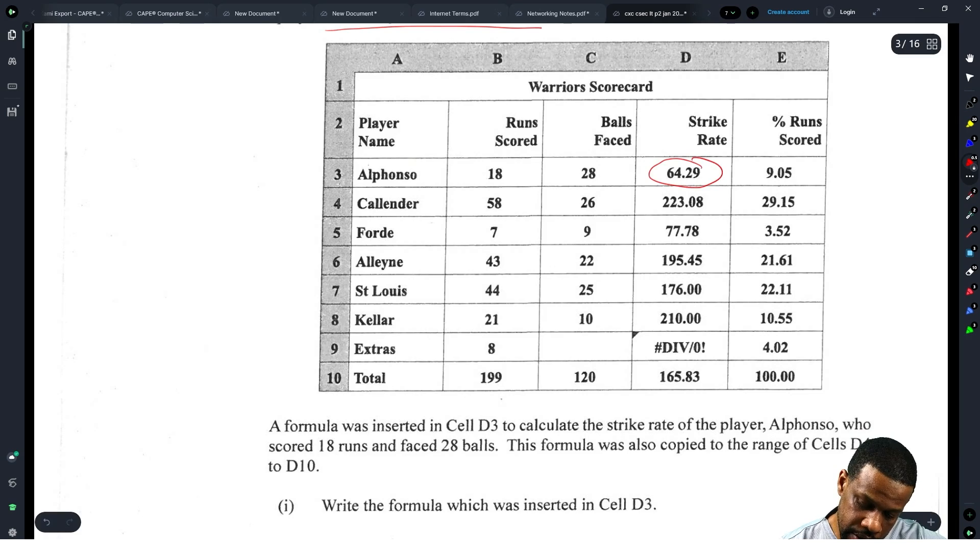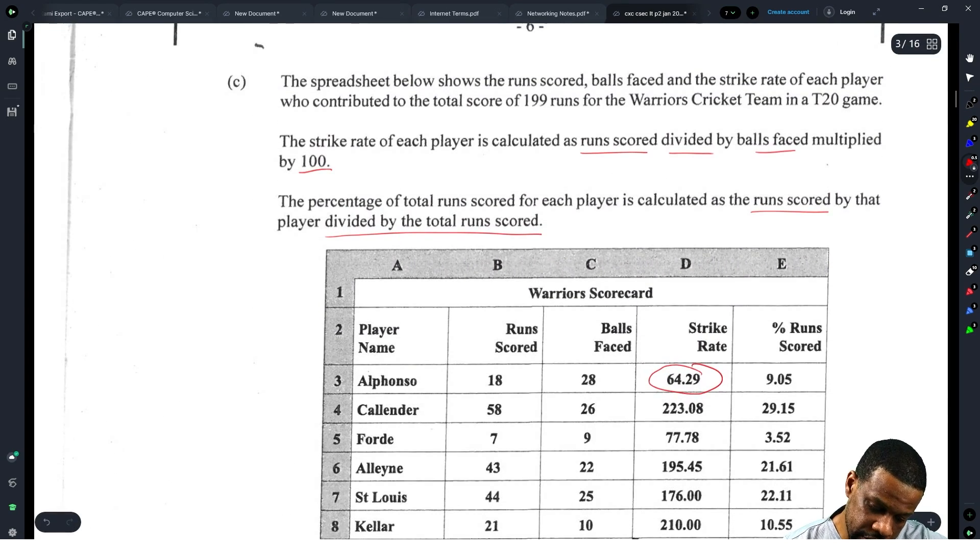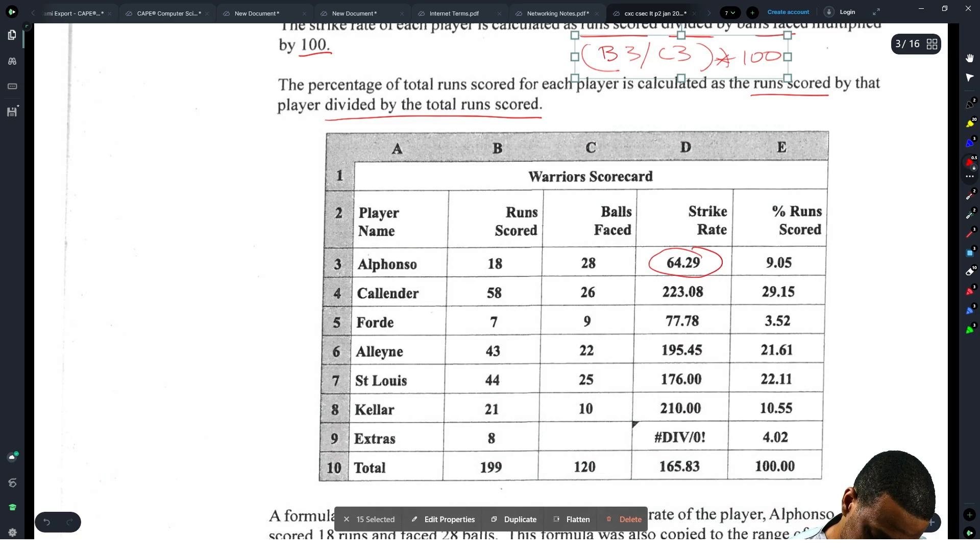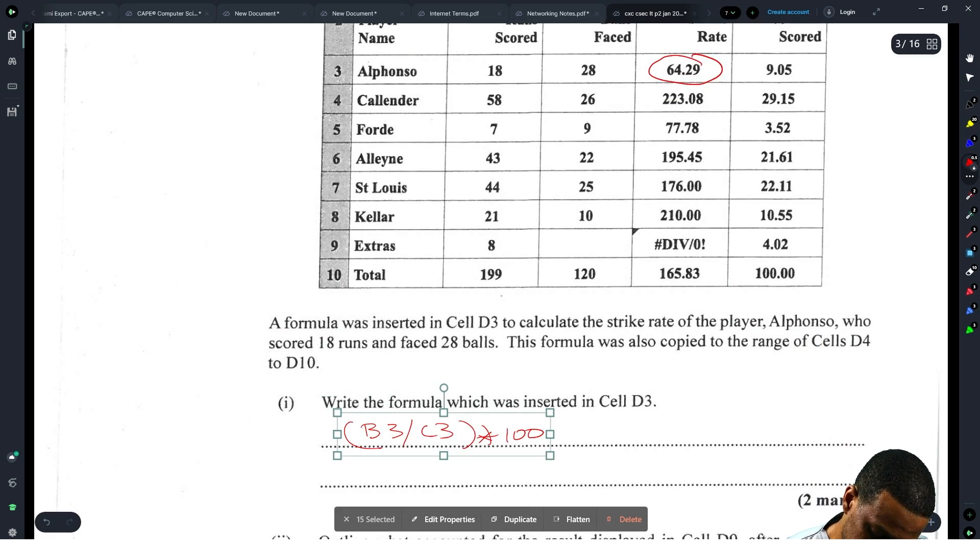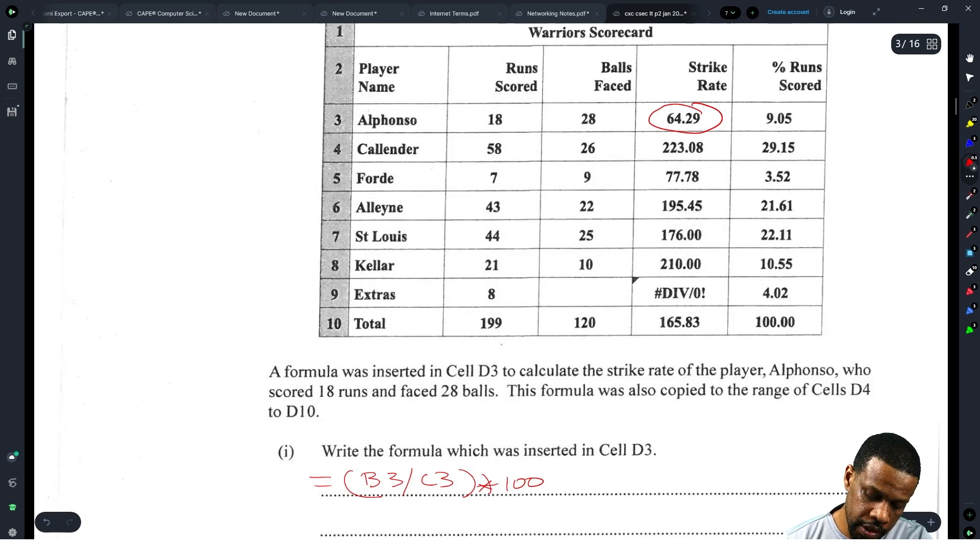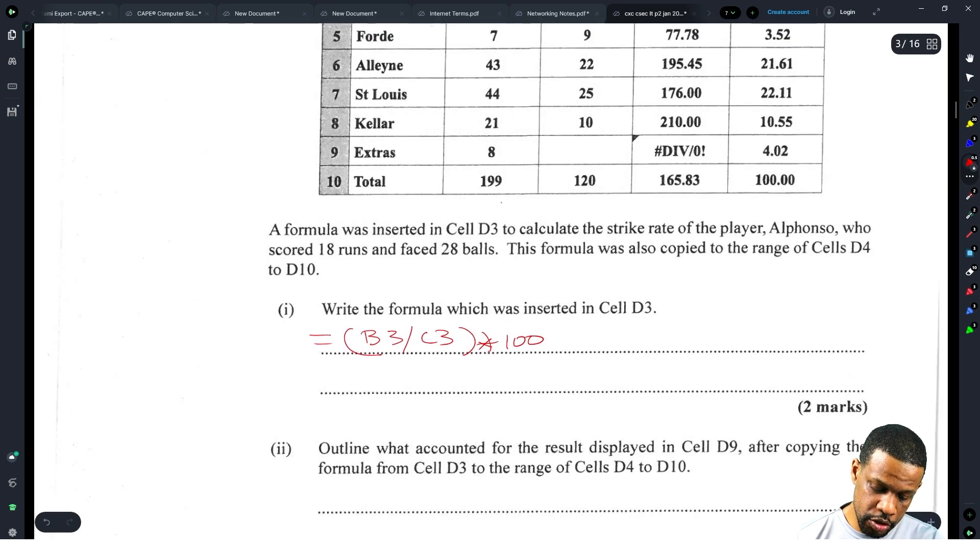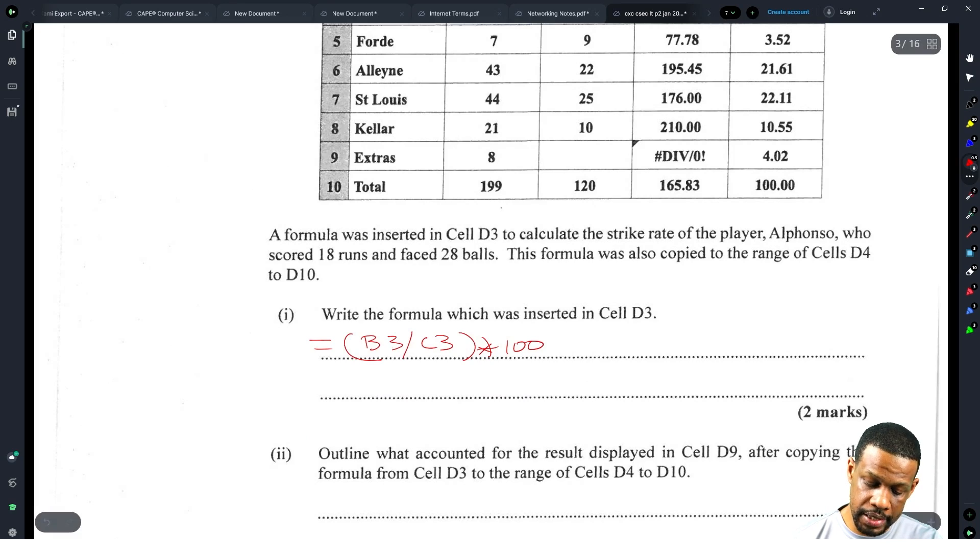A formula was inserted into cell D3 to calculate the strike rate of the player Alfonso who scored 18 runs and faced 28 balls. Write the formula which was inserted into D3. Run scored in here is B3 divided by number of balls faced which will be C3 multiplied by 100. Slap an equal sign in front of that, boom, that's the calculation there: =B3/C3*100 because that is spreadsheeting.